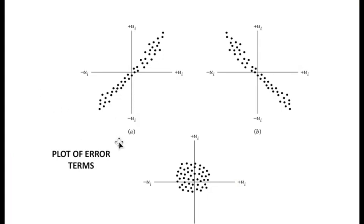In graph A, as we can see, as one error term increases, the other error term increases. This is a clear positive relationship between the error terms and this is undesirable in linear regression equations.